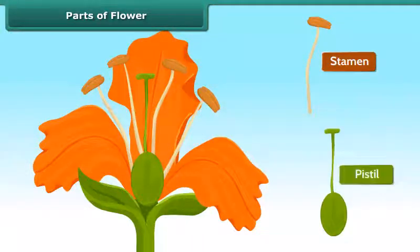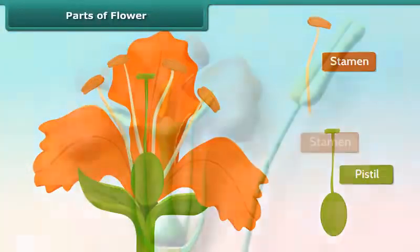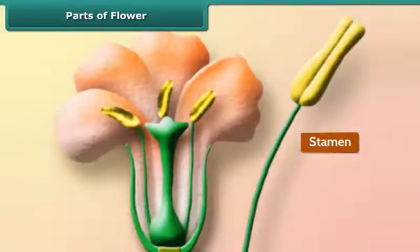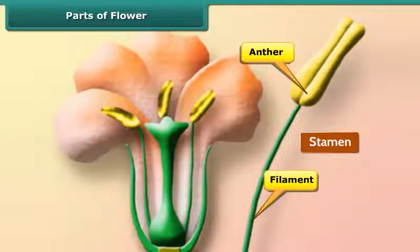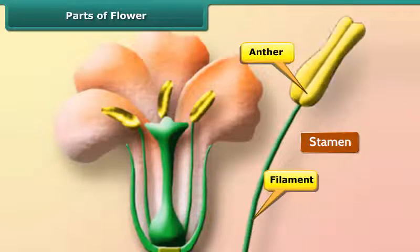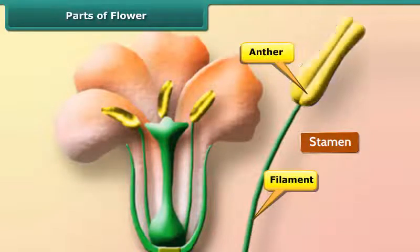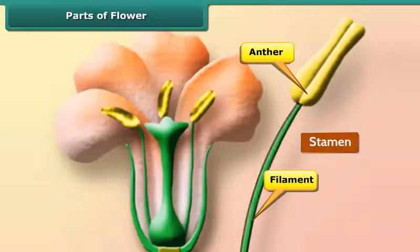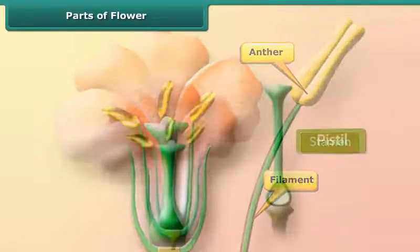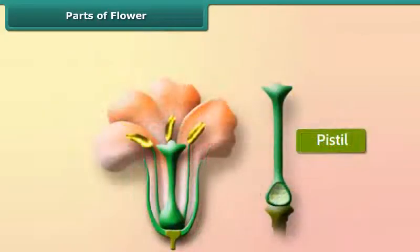The stamen has two parts: anther and filament. The anther is generally yellow in color and carries the pollen. It is held up by a thread-like part called a filament.